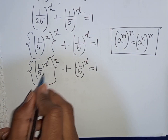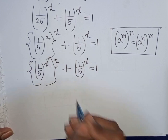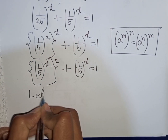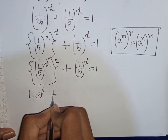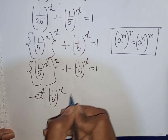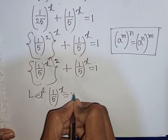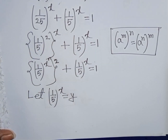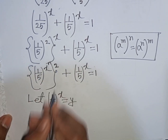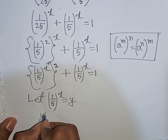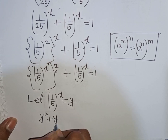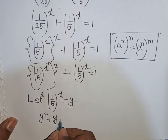We see that (1 over 5) power x appears in both terms. So let (1 over 5) power x be substituted by y. Our equation becomes y squared plus y equals 1.